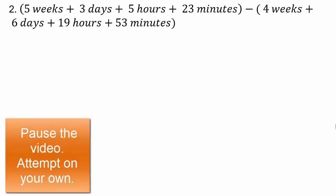Next problem: 5 weeks, 3 days, 5 hours, 23 minutes minus 4 weeks, 6 days, 19 hours, 53 minutes. Imagine you're counting down to a vacation — you knew you had to wait that long and you've already waited 4 weeks, 6 days, 19 hours, 53 minutes, so you want to know how much longer. Useful conversions: 1 week = 7 days, 1 day = 24 hours, 1 hour = 60 minutes. Pause the video and attempt this on your own.